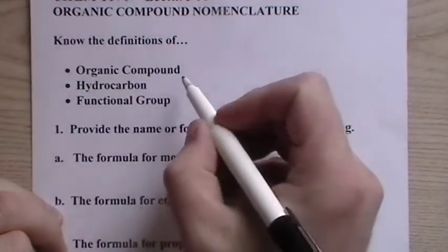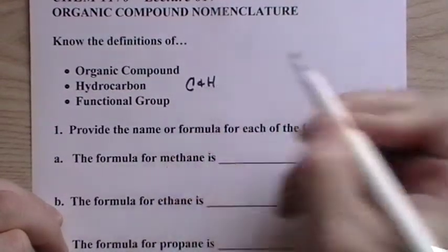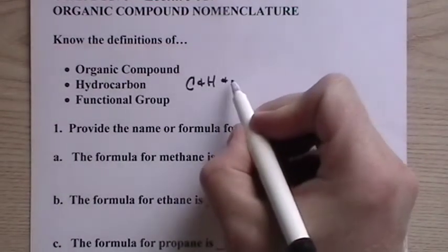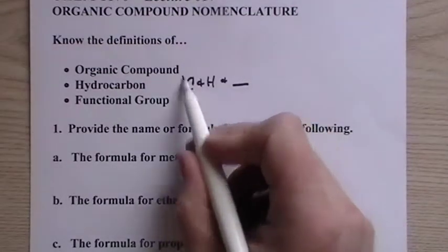One here that we can talk about - hydrocarbon is any compound that contains just carbon and hydrogen. That's mostly what we're going to be naming here, that's what these organic compounds are. They can also have something else attached, but it's always going to have carbon and hydrogen.